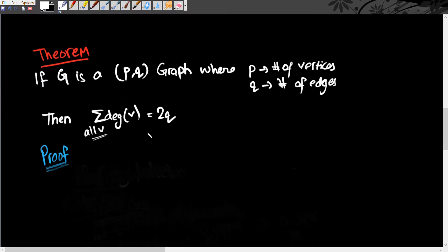Next we'll go over a fundamental theorem in graph theory — a stepping stone for solving many problems. The theorem states: if g is a (p,q) graph where p is the number of vertices and q is the number of edges, then the summation of degree of v for all v equals 2q. In simpler terms, if you sum the degree of each vertex, you get twice the number of edges.